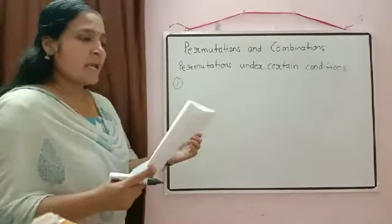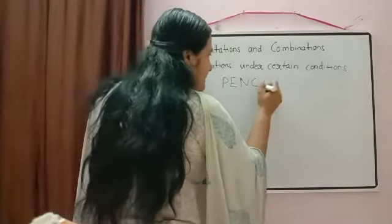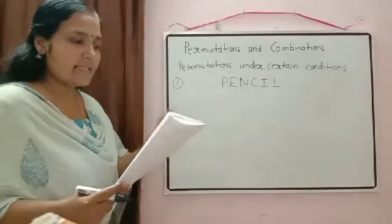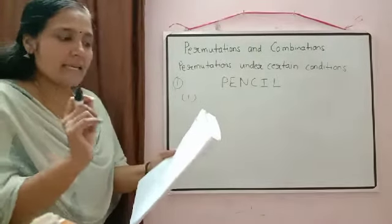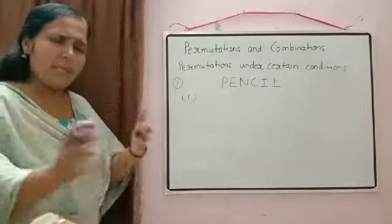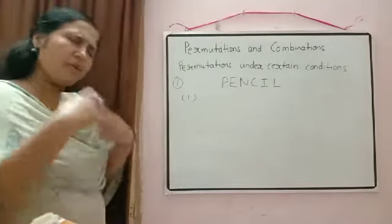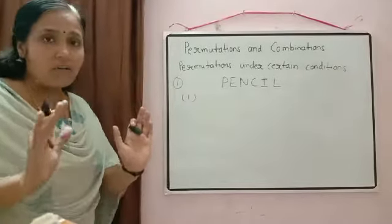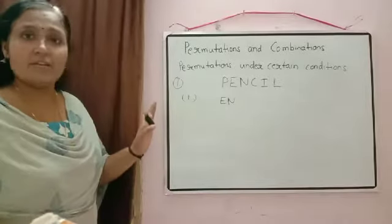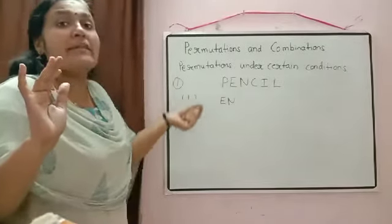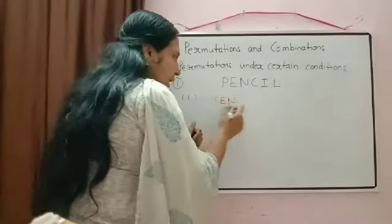Question number one: in how many ways can the letters of the word PENCIL be arranged so that the first condition is N is always next to E? N should always be next to E — if E is there then after that N only should come. So E and N will go together only, making a bond.